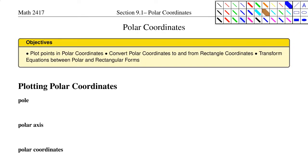Section 9.1 is about polar coordinates. Up until now, you've probably only used rectangular coordinates. Rectangular coordinates is the system based on two axes, x and y, that form a right angle and intersect at a point called the origin. Points in the rectangular coordinate system are in the form x, y, where you go left or right x units and then up or down y units.